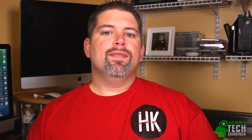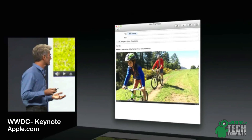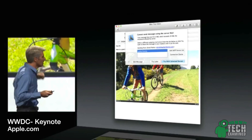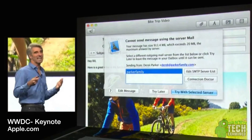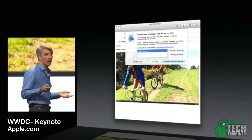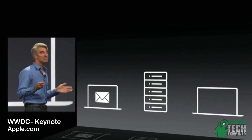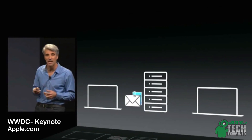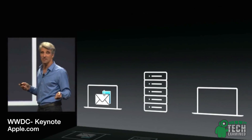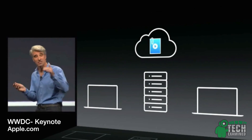Mail got an update, and if you're someone that uses a third-party application, you might want to give this a try again. They've updated the UI to allow you to do much simpler things, making it easier to get to your multiple accounts, as well as sending large files. You heard that right — Apple has figured out a way to send up to 5 gigs of data. No more getting that message that you can't send a large picture or multiple pictures to someone.